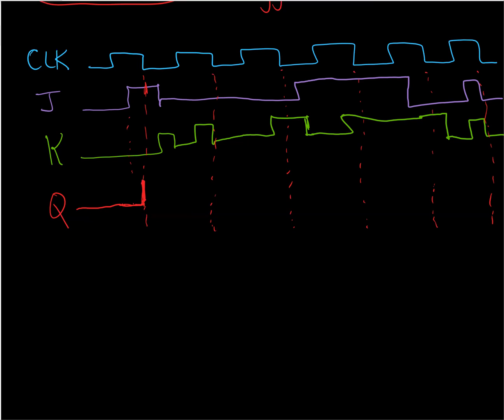Now, Q will stay set regardless of what J and K are doing there until the next falling edge of the clock. And at this falling edge of the clock, J and K are both zero. So Q is going to have a no change and it's going to hold.